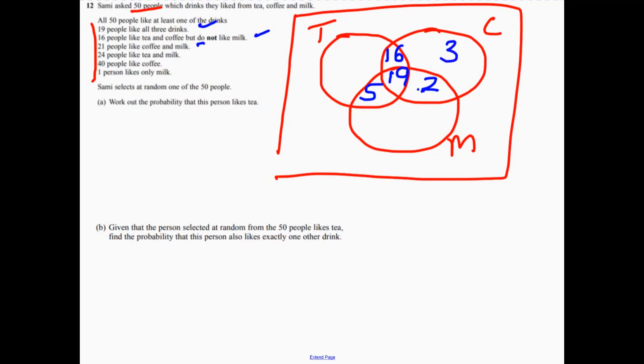One person likes only milk, just there. And one bit of information I just missed is that all 50 people liked at least one of the drinks. So there's a zero just there.